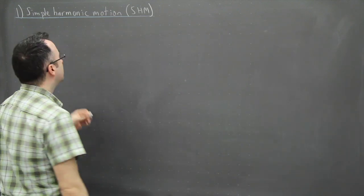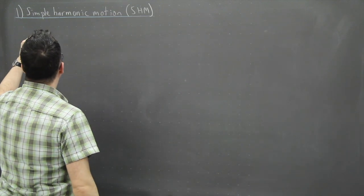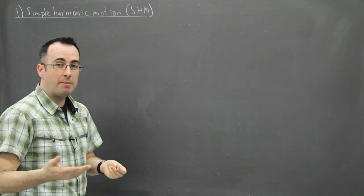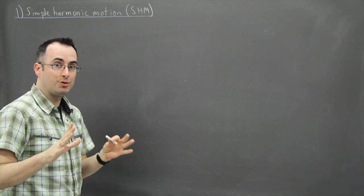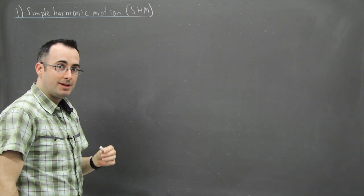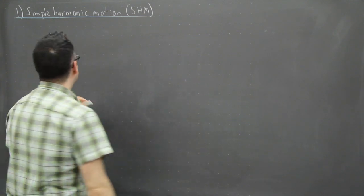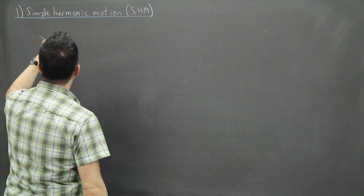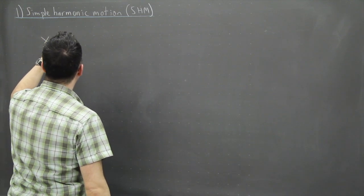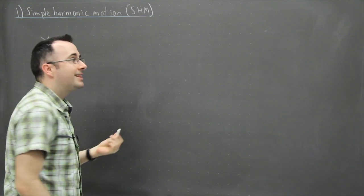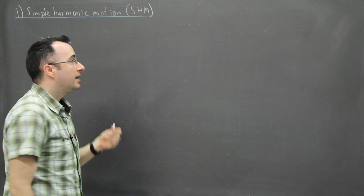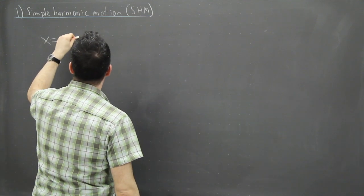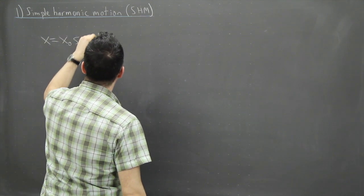So the very first equation — there's a whole bunch of them, I'm not going to show you all of them, but I will show you a few. One of the main ones is this one: it goes x equals x₀, and then what we do is multiply that value by sine omega t.